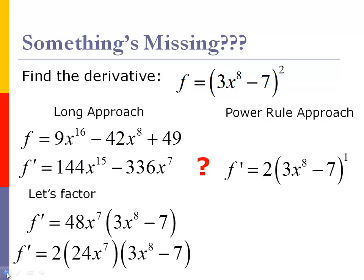So I'm thinking, hey, why don't I factor out a 2? So now I got a 2, I got a 3x to the 8th minus 7. And so what I'm trying to do here is just explore. Please be patient with me here. Just exploring and seeing, is there any kind of pattern? Is there some kind of relationship? Because I would love to be able to use the power rule on more involved functions. But as you're saying, it doesn't quite work. We need to figure out what's missing.